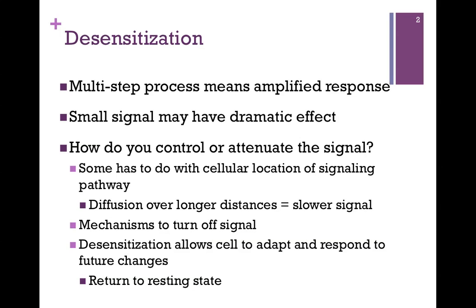So a small signal — a single ligand binding its receptor — can have a dramatic effect. The question is, if you start with a small signal and get an amplified response, how are you going to control that when you need things to return to a resting state? Some of this control has to do with the cellular location of the signaling pathway. If that second messenger has to diffuse over a longer distance, it's going to be a slower signal, and that's going to control the signal to some degree.